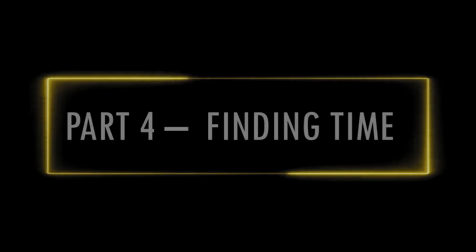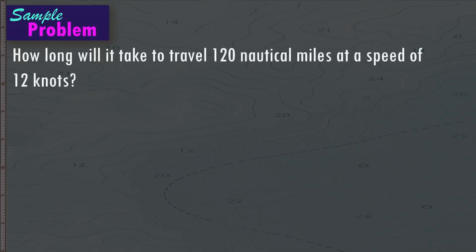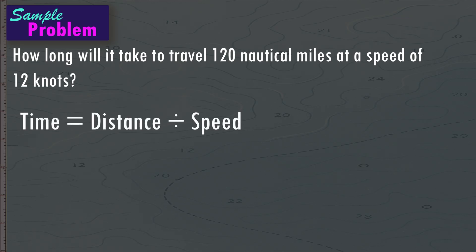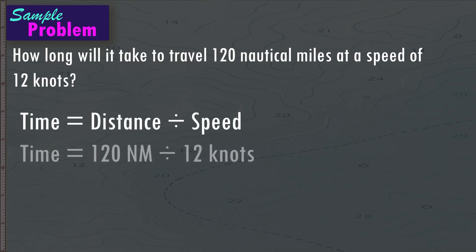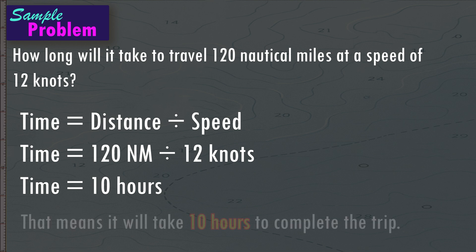Part four: finding time. Sample problem — how long will it take to travel 120 nautical miles at a speed of 12 knots? Time equals distance divided by speed. Time equals 120 nautical miles divided by 12 knots. Time equals 10 hours. That means it will take 10 hours to complete the trip.